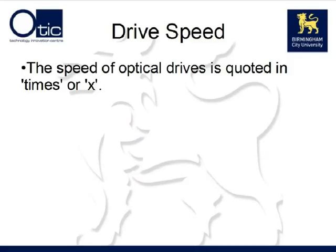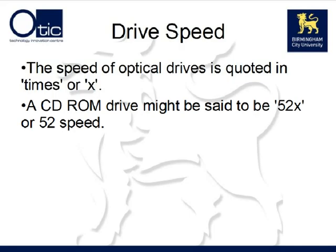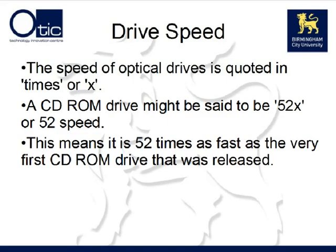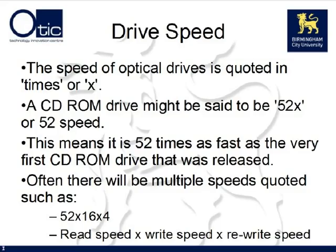When purchasing a drive, you will notice that the speed of the drive is measured in times or X. For example, a CD-ROM drive might be said to be a 52X or 52-speed drive, meaning the drive is 52 times as fast as the very first CD-ROM drive that was released. Often you will find that multiple speeds are quoted for a drive — for example, 52x 16x 4. When seeing speeds quoted like this, the read speed is always quoted first, then the write speed, and then the rewrite speed. Generally, a drive will always read faster than it can write and write faster than it can rewrite.